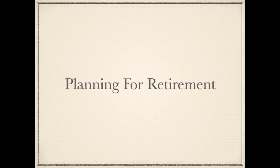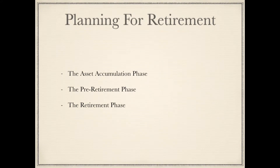Planning for retirement is crucial for creating investment strategies for sustainable income during your retirement years. There are three main phases that need to be considered when planning for retirement, and should be started as early as possible. It's never too early to start. The asset accumulation phase — this is the phase from when you first start to work all the way up until just before your pre-retirement. The pre-retirement phase — this is the period of time when you are preparing for your retirement. And the retirement phase, when you are fully retired.